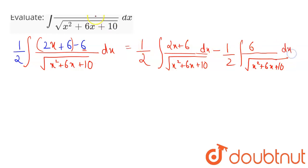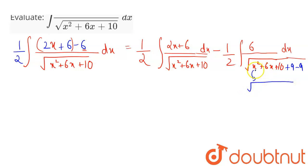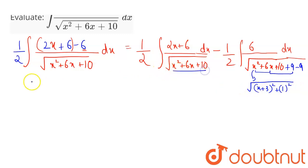Into dx. Now I am adding and subtracting 9 here. So the denominator can be written as the square root of — combining these three terms together — (x + 3) squared plus 10 minus 9, that will be plus 1 squared.